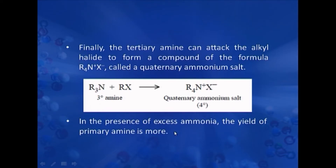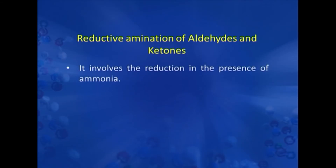In excess ammonia, the yield of primary amine is more because during the reaction the primary amine formed acts as a nucleophile, but if we compare the amount of ammonia with that of primary amine, the amount of ammonia is more. Therefore, there is competition between the two, and more primary amine is formed. That is why if we want to prepare primary amine in excess, excess of ammonia is taken in the reaction mixture.